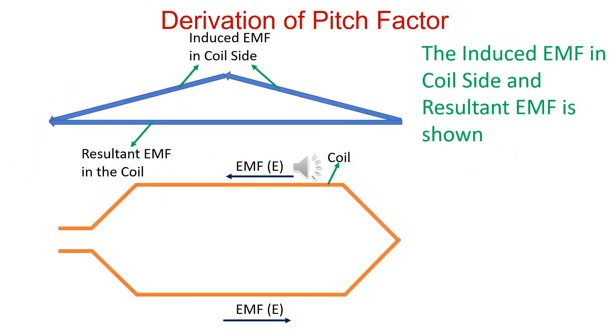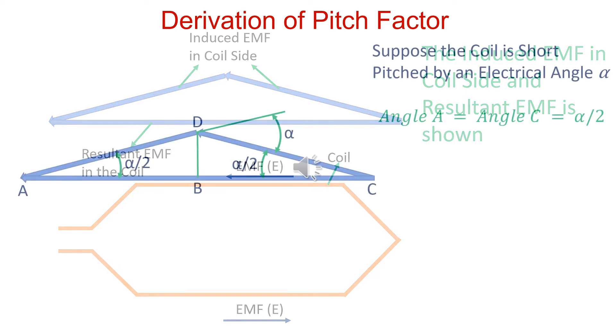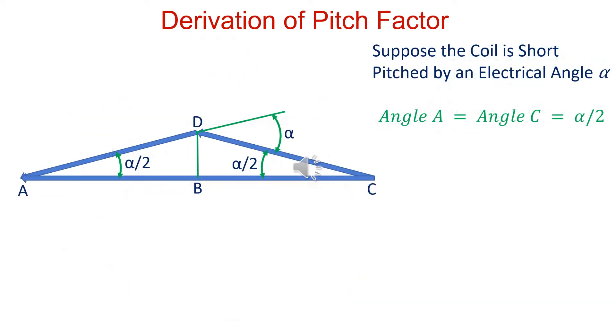Induced EMF in one coil side and resultant EMF is shown. Suppose short pitch angle is alpha. Angle A and angle C are alpha by 2.